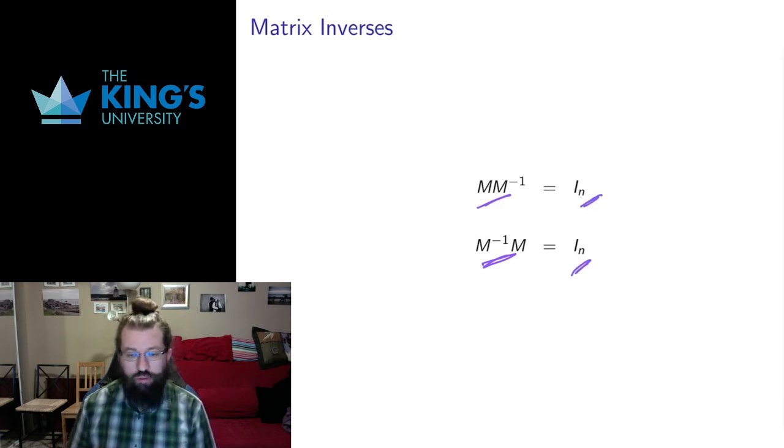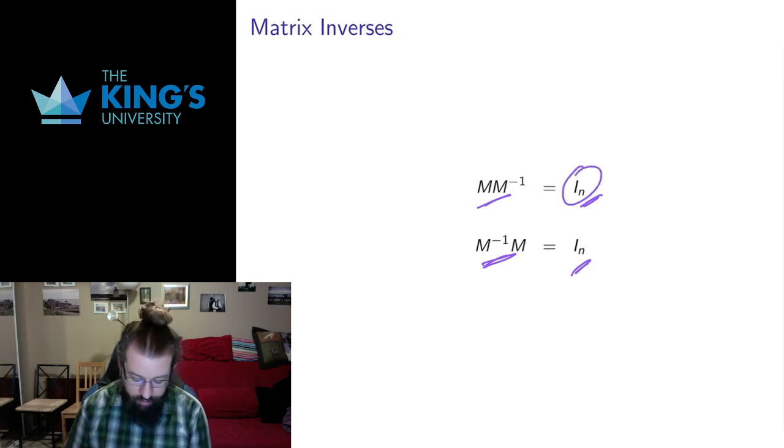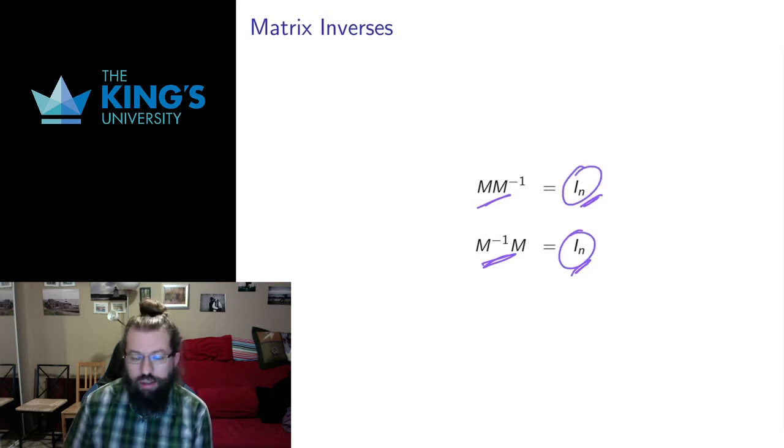This only works for square matrices, so we're only going to talk about inverses for transformations that keep in the same dimension, R² to R² or R³ to R³. Otherwise, we can't even define this multiplication on both sides. And we get here the identity matrix I_n—this n is the domain that we're working in. So this is an n by n matrix working in R^n, transformation from R^n to R^n. We multiply matrices; if we have a matrix, we can multiply on the left and the right and get the identity—that is called the inverse matrix. Sometimes it exists, sometimes it doesn't.